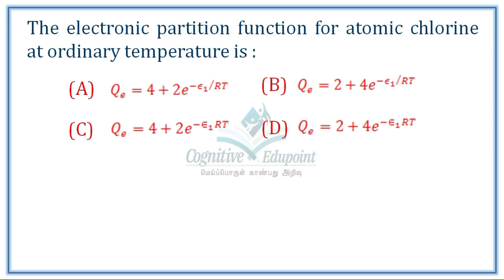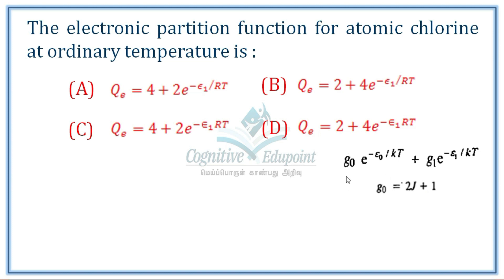The Electronic Partition Function of Atomic Chlorine at ordinary temperature — the general formula includes the ground state, first excited state, and so on. Here, gi is equal to 2j plus 1, where j is the quantum number for the term, giving gi = 2j+1. e0 is the ground state energy, which is normally taken as 0, and e1 is the first excited state energy.